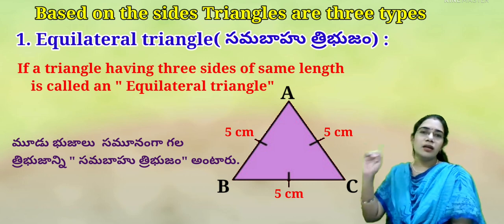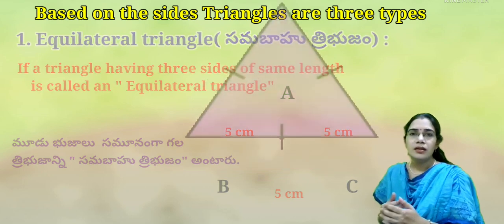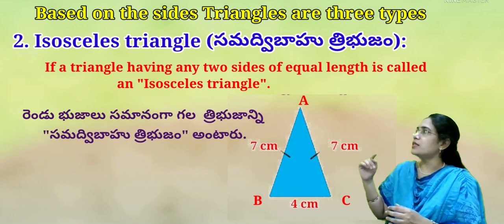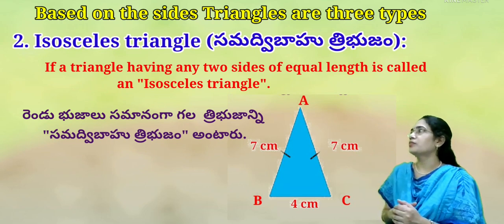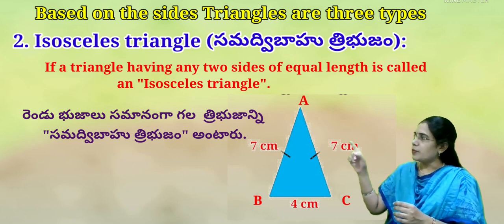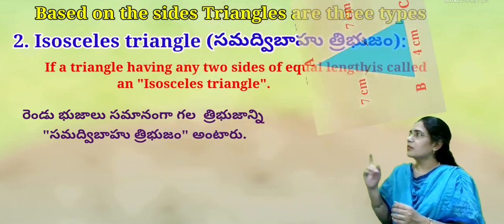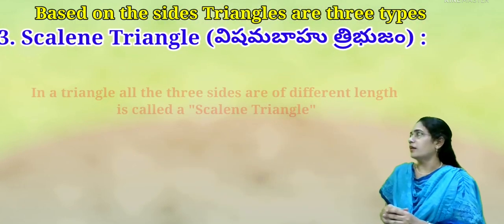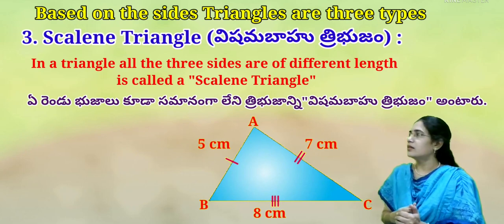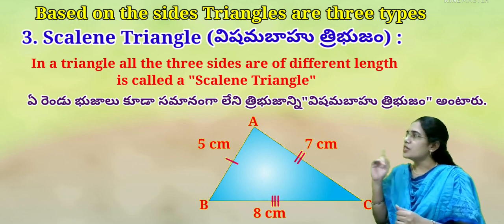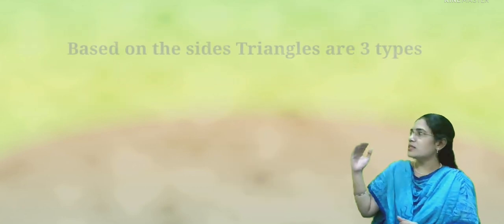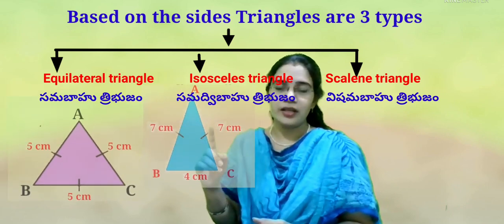A triangle with three equal sides is called an equilateral triangle (Samabahu Thribujamu). Next, an isosceles triangle (Samadvi Bahu Thribujamu) is a triangle having any two sides of equal length — here, AB and AC are of equal length. After that, a scalene triangle is one in which all three sides are of different length.